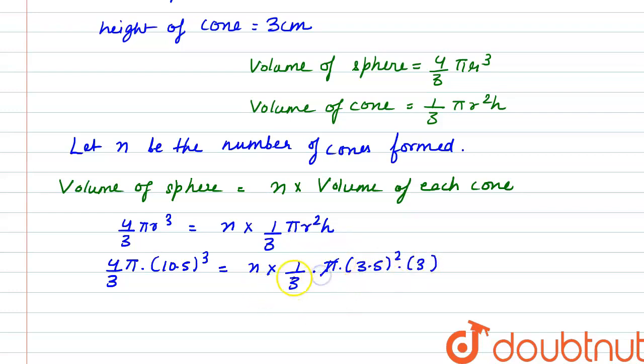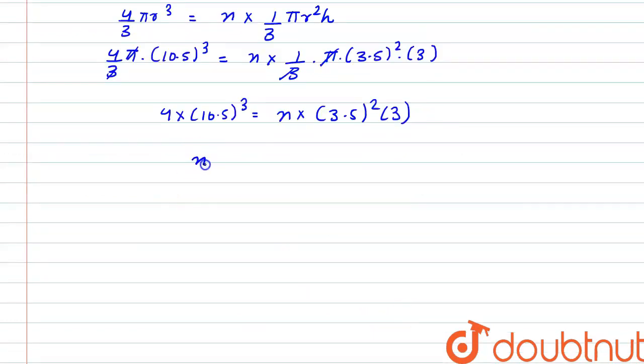Pi by 3 gets cancelled out from both sides, so we have 4 into 10.5 whole cube is equal to n into 3.5 whole square into 3 or we can write the value of n as 4 into 10.5 whole cube divided by 3.5 whole square into 3.